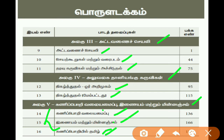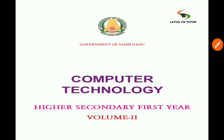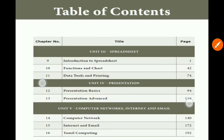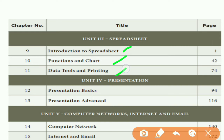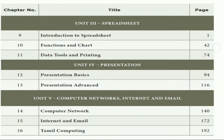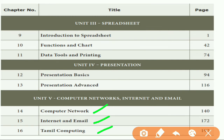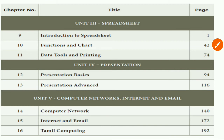The English textbook front page and table of contents cover spreadsheet topics: introduction to spreadsheet, functions and charts, data tools, and printing — three spreadsheet categories. For presentation: presentation basics and presentation advanced. For internet concepts: computer networks, internet and email, and Tamil computing — three chapters in the last section on computer networks.